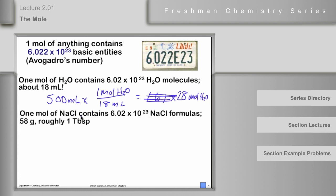One mole of sodium chloride — that's 6.02 × 10²³ sodium chloride formula units — is 58 grams, which is about one tablespoon. One tablespoon of salt is roughly a mole.